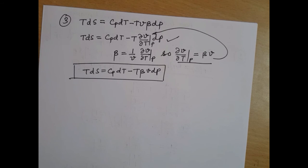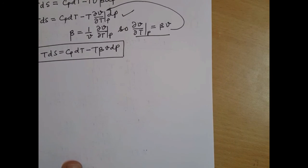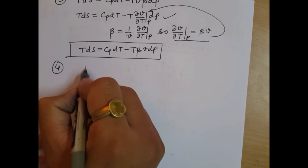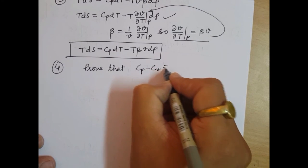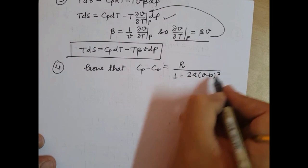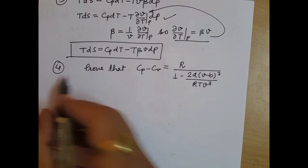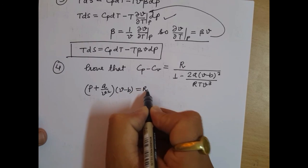Now, a very important problem to prove: prove that Cp minus Cv equals R divided by Y, times 1 minus 2A(V minus B) squared by RTV cubed, for the Van der Waal gas equation. The Van der Waal gas equation is given as P plus A by V squared, times V minus B, equals RT.